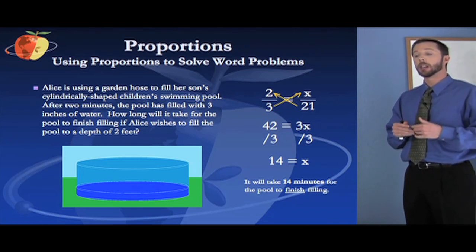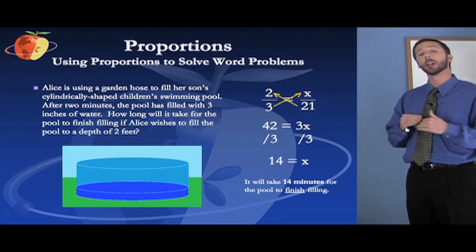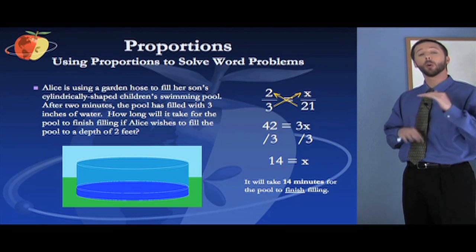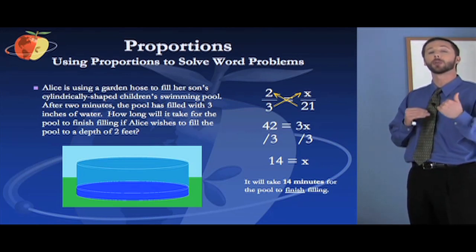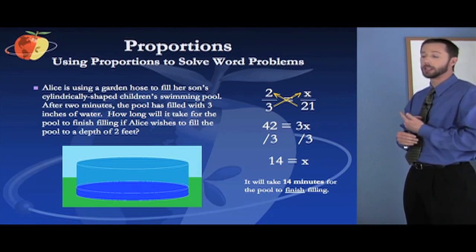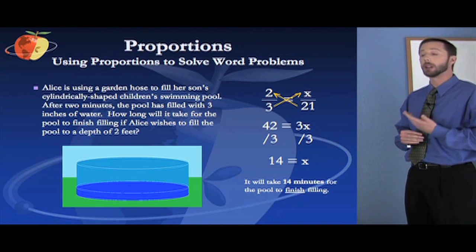It's already been filling and it's filled three out of those 24 inches. So we only care about the inches that it takes to finish filling. So the total is 24, but it's already filled three of those 24. So we subtract three from 24 and we get 21. So 21 is going to be our denominator of the second fraction here. Now we can simply cross multiply.